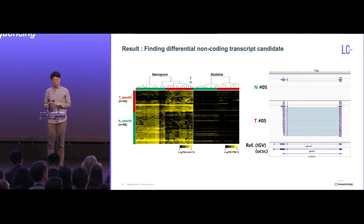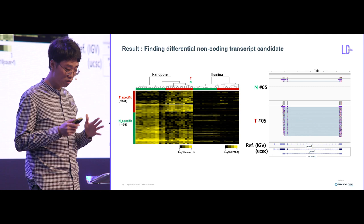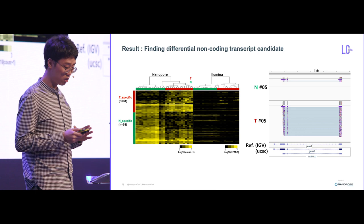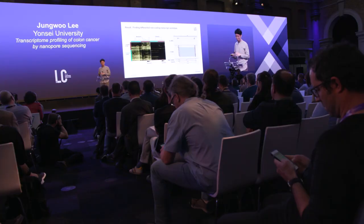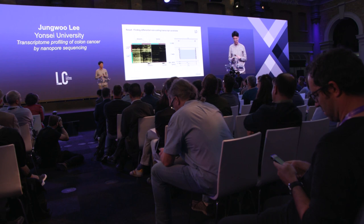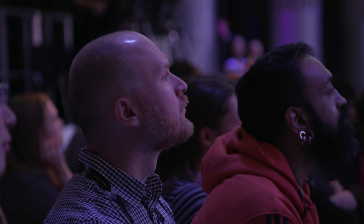Next, we extracted differentially expressed genes annotated as non-coding RNA and clustered the samples using these genes. The division was clear between the normal and tumor samples. Although we could see a clear differential pattern between groups in nanopore, the Illumina non-coding RNA expression seemed to be underestimated. One example of a tumor-specific non-coding RNA, annotated as long non-coding RNA, could possibly be a diagnostic marker candidate in the non-coding region.